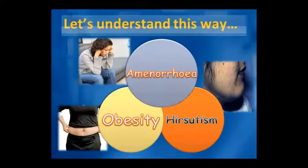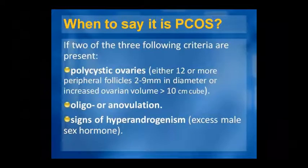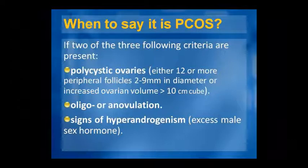In PCOS, we see amenorrhea, hirsutism, and obesity. The diagnostic criteria for polycystic ovaries include 12 or more peripheral follicles of 2–9 mm diameter, and ovarian volume greater than 10 cm³. The second criterion is anovulation — ovules are not released because follicles do not mature sufficiently.